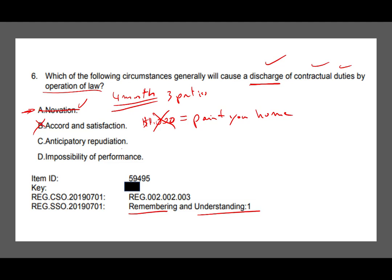Anticipatory repudiation means I signed the contract and told you in advance that I'm going to breach it. Will I be discharged of my contractual duties? Absolutely not — I'm going to be in legal trouble. So that's out. By process of elimination, the answer is D: impossibility of performance. The fact that it's impossibility of performance means it will discharge by operation of law. There are two types: subjective and objective impossibility.